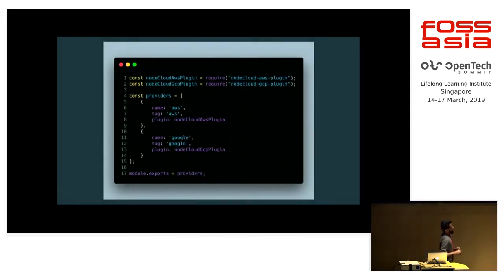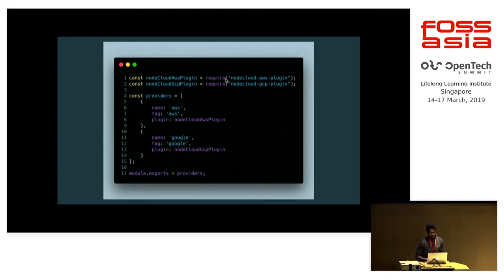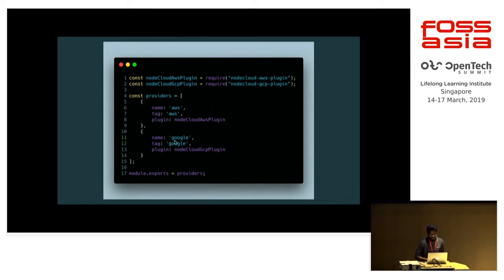To get started, we have different plugins and a configuration file called nc.config.js. In that file, we import our plugins — for example, a NodeCloud AWS plugin and a NodeCloud GCP plugin. We specify our providers, and here we have AWS and Google providers.